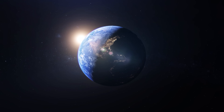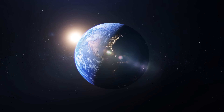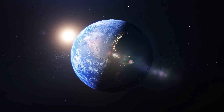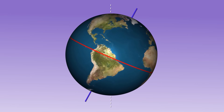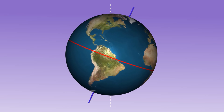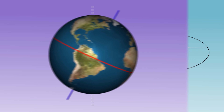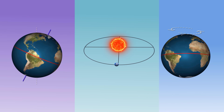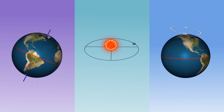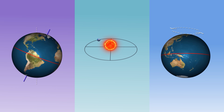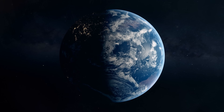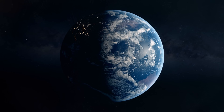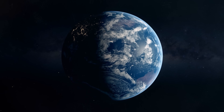The amount of sunlight that reaches the upper atmosphere is determined by three astrophysical features of the planet: the inclination of the axis, the shape of the orbit or eccentricity, and the precession of the axis. They are the basis for Milankovitch's cycles.